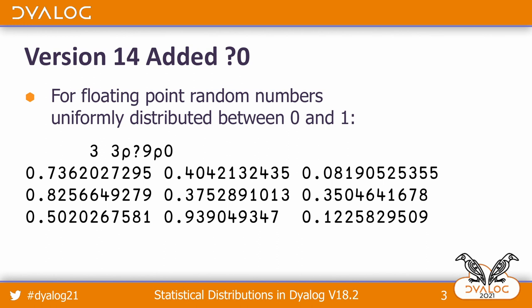Version 14 added question mark zero, which is a way of getting uniformly distributed numbers between zero and one that are random. As you see, there's no predicting what particular number you're going to get, but we can say that they have a good characteristic of randomness.